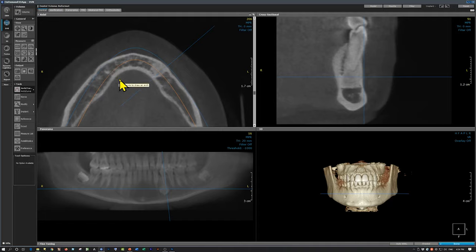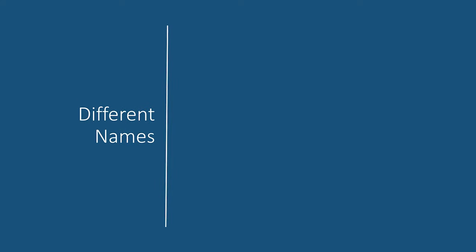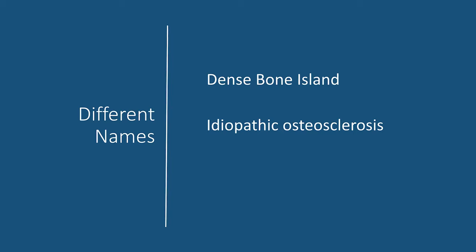This is a dense bone island. The dense bone island has different names — it is also known as idiopathic osteosclerosis. It can also be called an enostosis. Enostosis is the internal counterpart of exostosis. An exostosis or torus is on the outside of the cortical plate, while an enostosis is on the inner aspect of the cortical plate.